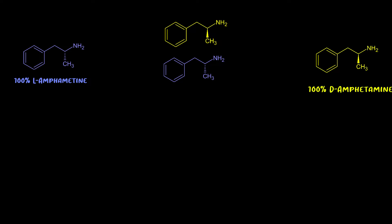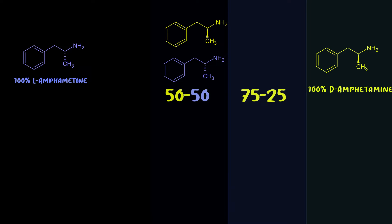The easiest starting point for understanding the differences between amphetamine stimulants is the ratio of d to l-amphetamine. Starting with the fan favorite, Adderall is 75% d-amphetamine and 25% l-amphetamine. More specifically, it's a combination of four different amphetamine salts — two of which are 50/50 d and l, and two of which are 100% d-amphetamine, which is why bottles say 'mixed amphetamine salts.' In theory, the different salts dissolve at different times for a gradual effect, but there isn't actually research showing it works that way.